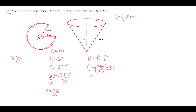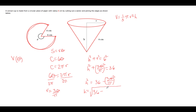Now we will solve for h. We subtract the quantity 3 theta over pi squared from both sides, giving h squared equals 36 minus the quantity 3 theta over pi, squared. We then square root both sides to get h by itself, giving h equals the square root of 36 minus 9 theta squared over pi squared.